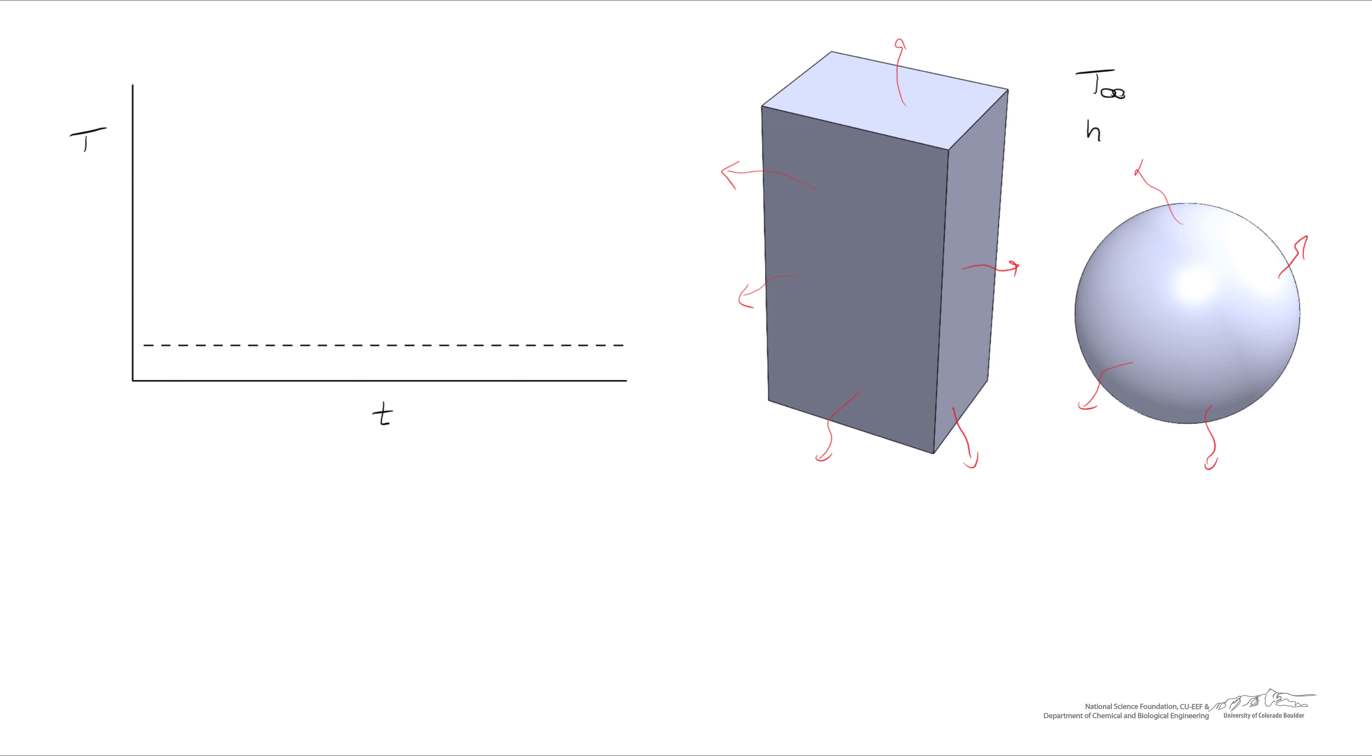So a graph of temperature as a function of time - you may already know the solution, but there's some initial temperature, some initial hot temperature, and that decays asymptotically. The dashed line here is T infinity, and it asymptotically approaches T infinity over a long period of time.